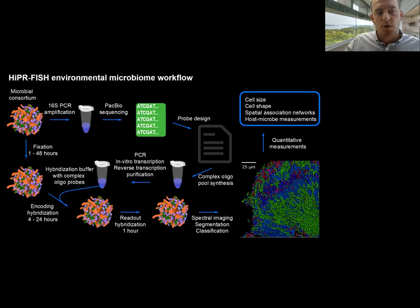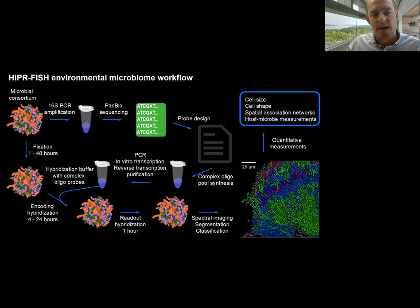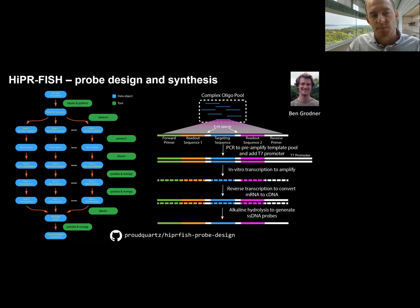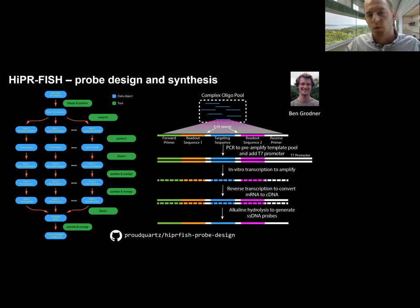To use this technology to probe actual environmental microbiomes, we performed 16S amplification and packed bio-sequencing to generate a library of 16S sequences in the sample, which allowed us to design probes. We ordered complex oligopools and stained the communities with these complex oligoprobes, then performed spectral imaging and segmentation. The probe design is automated using software — we often generate thousands of probes to measure a single community. We order complex oligopools of single-stranded DNA oligos synthesized by array technologies.